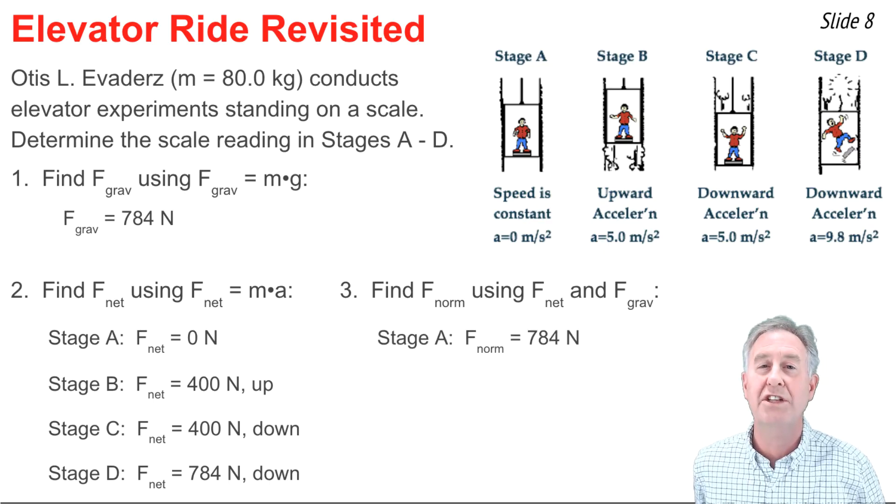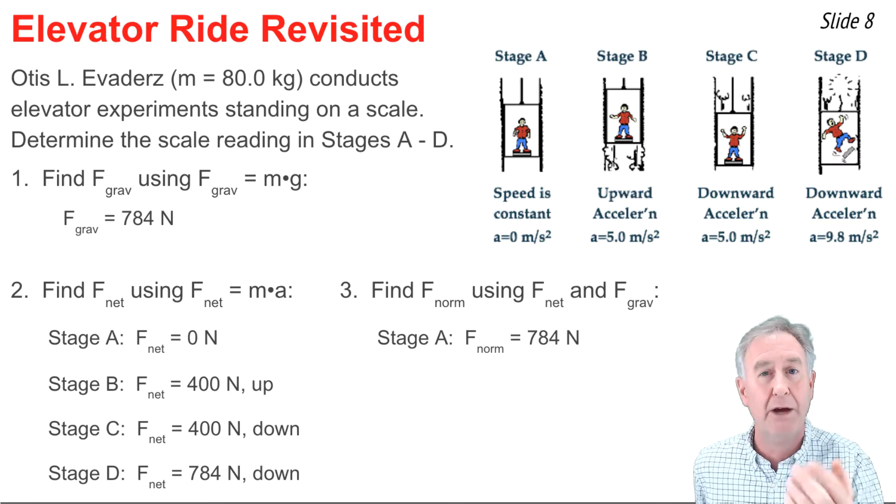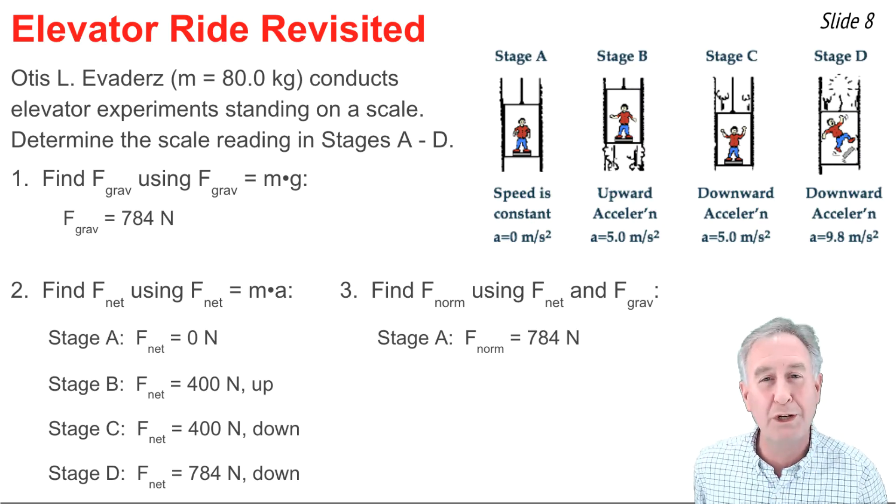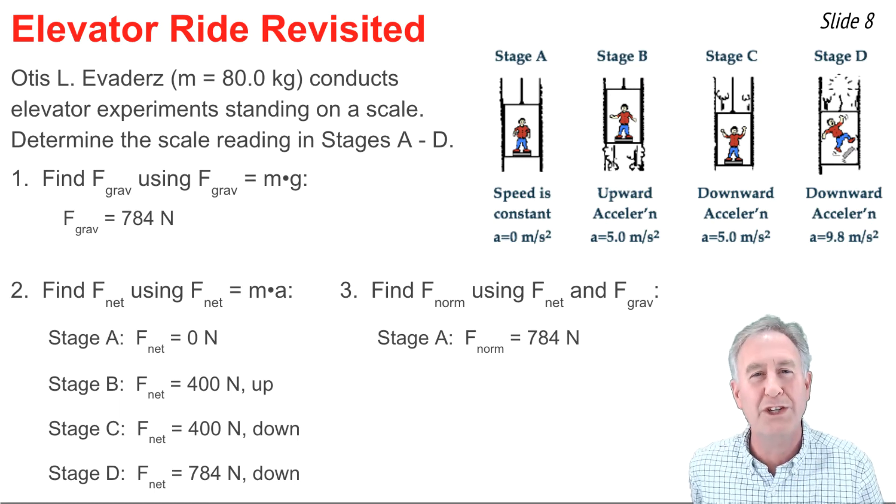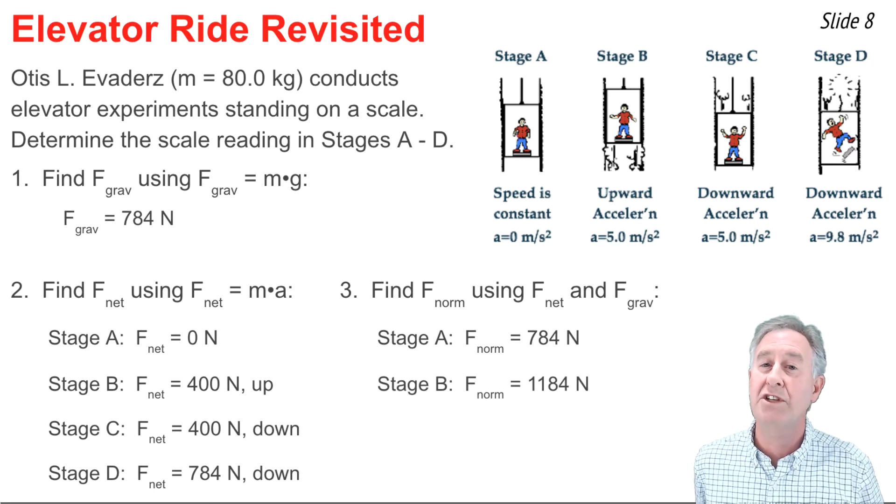In stage B, I notice that the winner is the up force by a winning margin of 400 newtons, so the up force is 400 newtons greater than the 784 down force, making the normal force in stage B 1184 newtons.